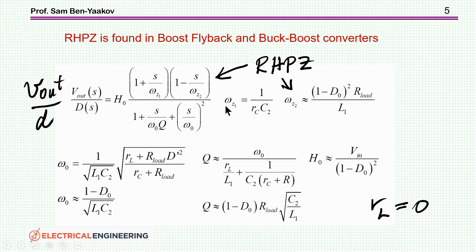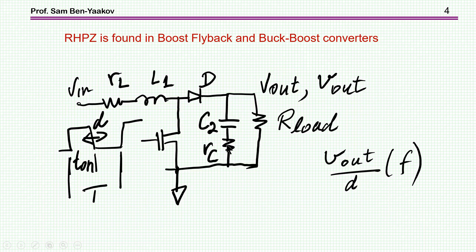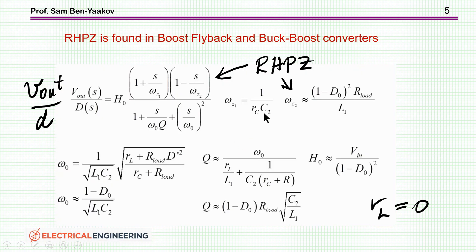Now the regular zero left side is located at omega, one over the resistance and C, this is the ESR here and the capacitance, while the right half plane zero is located here. This is one minus d times d squared times the load divided by the inductor.